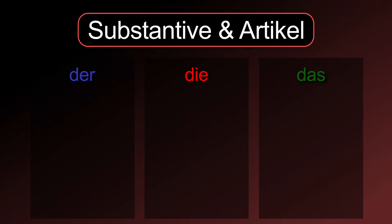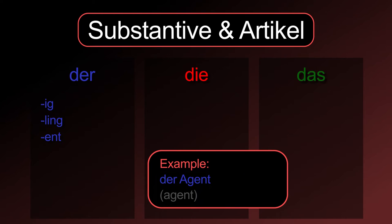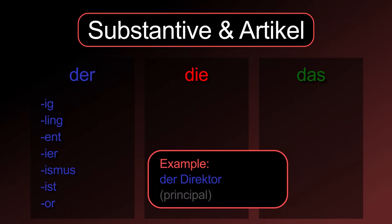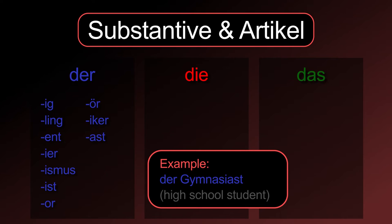Let's start with the typical suffixes for masculine nouns. -ig: der Honig. -ling: der Schmetterling. -ent: der Agent. -ier: der Offizier. -ismus: der Kapitalismus. -ist: der Polizist. -or: der Direktor. -ör: der Likör. -iker: der Optiker. -ast: der Gymnasiast. -eur: der Regisseur.